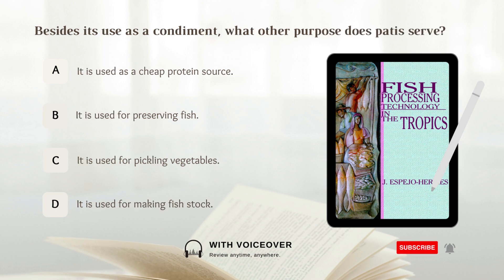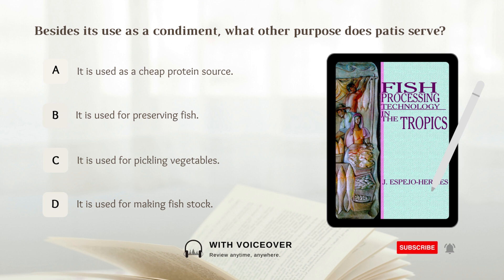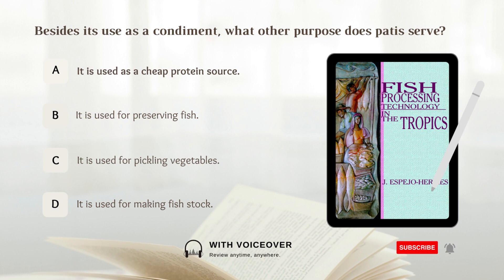Besides its use as a condiment, what other purpose does patis serve? A. It is used as a cheap protein source. B. It is used for preserving fish. C. It is used for pickling vegetables. D. It is used for making fish stock. Answer: A. It is used as a cheap protein source.